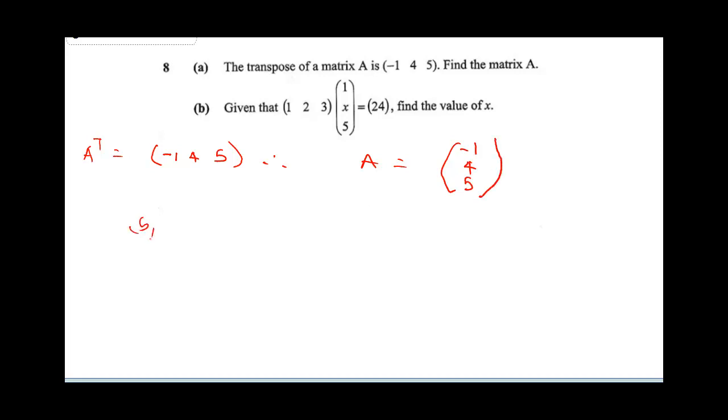This is 1, 2, 3 into 1, x, 5 is equal to 24. Find the value of x. We're going to multiply this matrix. 1 times 1 plus 2 times x plus 3 times 5, which is equal to 24.